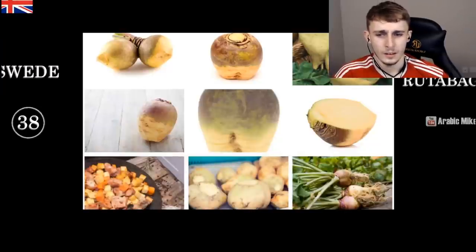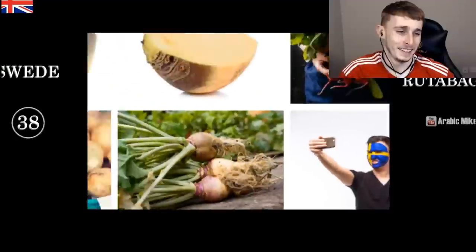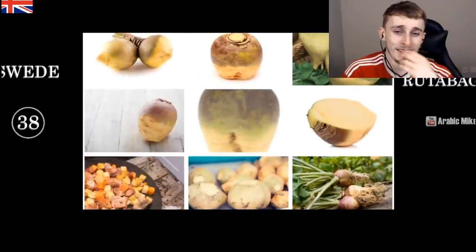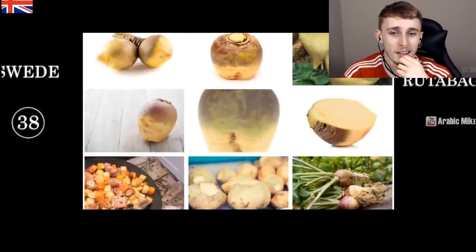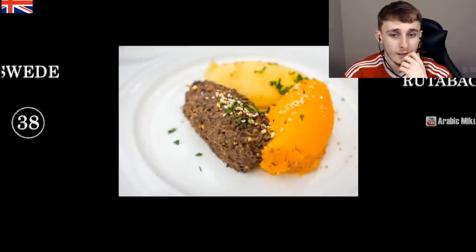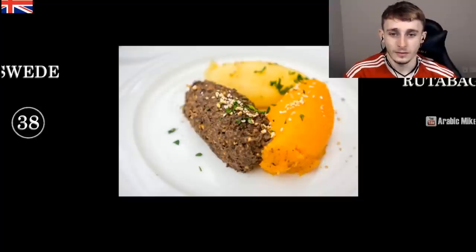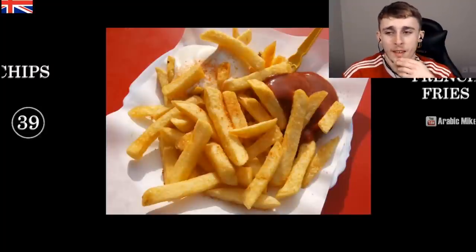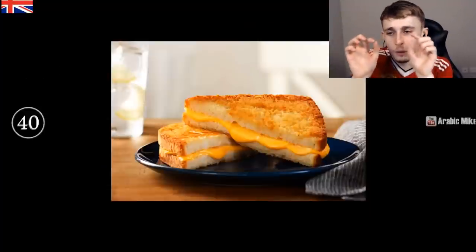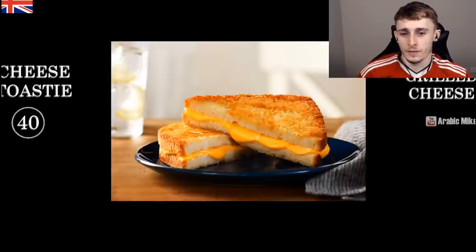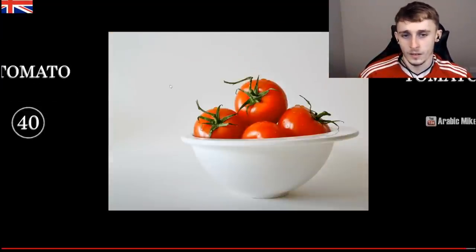A squash — greeny purpley vegetable. Then rutabaga — we call those swedes, like a Swedish person but the vegetable. If you're in Scotland you can have them with haggis — neeps and tatties are mashed swede and mashed potatoes, boiled in salted water, served alongside haggis, which is basically sheep's heart, liver, and lungs. Then chips versus french fries — the thin ones are french fries for me.